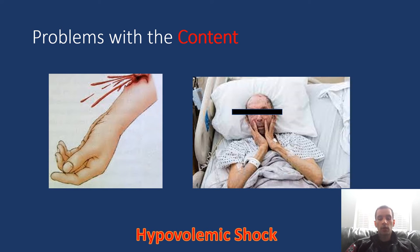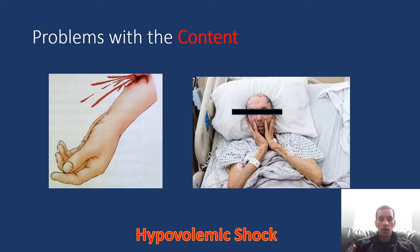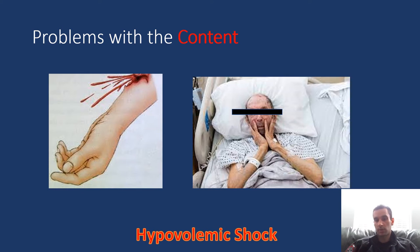Lastly, we could have a problem with what's in the pipes — the container — and we call that hypovolemic shock. One cause is bleeding: not enough blood in the pipes to transport around, a subset called hemorrhagic shock. You could also develop hypovolemic shock from severe dehydration, such as an elderly patient with dementia who doesn't have access to water and hasn't been drinking enough over time.